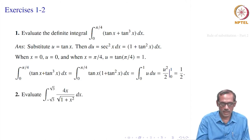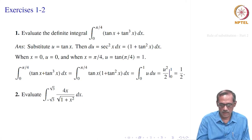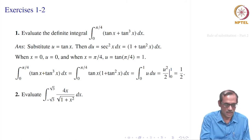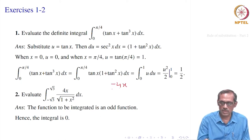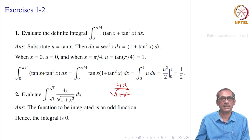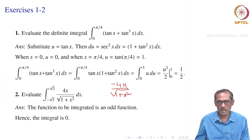Next, evaluate ∫₋√3^√3 4x/√(1+x²) dx. Notice it is a symmetric interval, so we should check for odd or even. Substituting −x for x: we get −4x/√(1+(−x)²) = −4x/√(1+x²), so f(−x) = −f(x) — it is an odd function. Hence the integral equals 0. We do not need to evaluate it; the odd function criterion gives the answer directly.